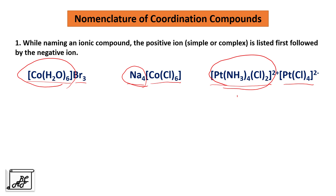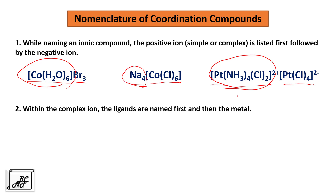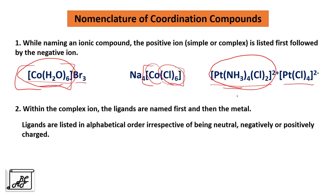The second rule is: within the complex ion — the square bracket portion — the ligands are named first and then the metal. As we saw in the last video, the surrounding moiety is called the ligand and cobalt is the central metal atom. We name the ligand first, then the central metal atom. If there are more than one ligands, they are listed in alphabetical order irrespective of being neutral, negatively, or positively charged.